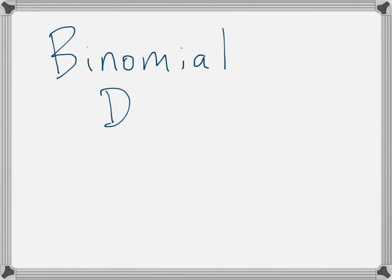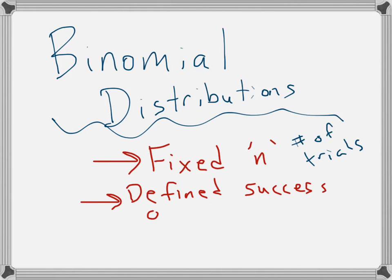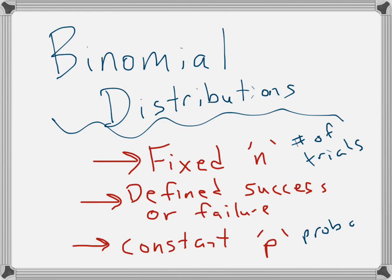It's important that we talk about binomials first, even though you've done a little bit of work on that from pages 349 to 351. So let's quickly recap binomial distributions. The key idea behind a binomial distribution is that it has three critical characteristics: a fixed number of trials, clearly defined success or failure — so either two options — and a constant P, which is the probability of success.